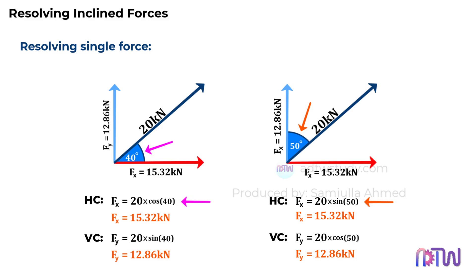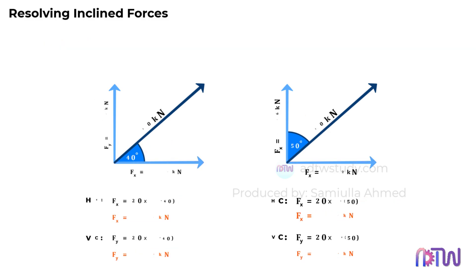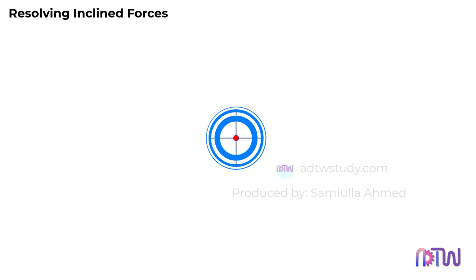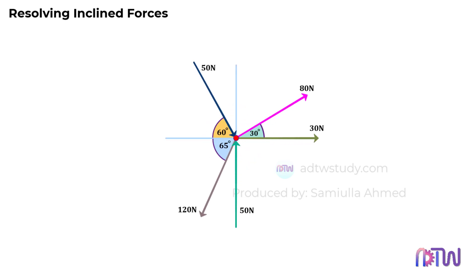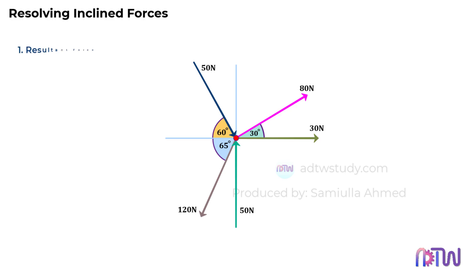Next, we will take a complex example to enhance our understanding. We're looking at a concurrent force system. In a concurrent force system, the lines of action of all the forces intersect at a single point. For such problems, we typically need to determine three things: the resultant force, the direction of the resultant force, and the position of the resultant force.